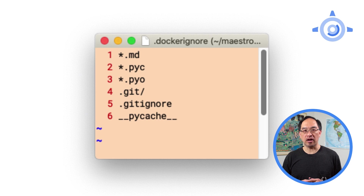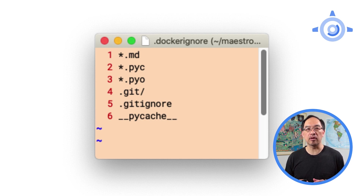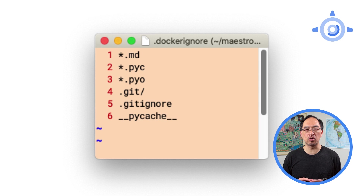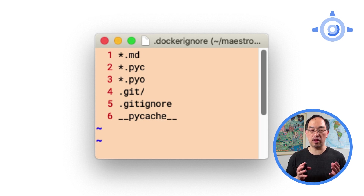Another good practice is to add a .dockerignore file. While it is optional, it helps keep unnecessary files from being added to your container. It can have a positive impact on your apps, controlling container size and preventing accidental exposure of secrets like API keys or OAuth credentials. This isn't Python-related, so you can use the same .dockerignore for both Python 2 and 3 apps.